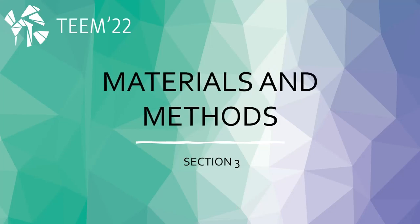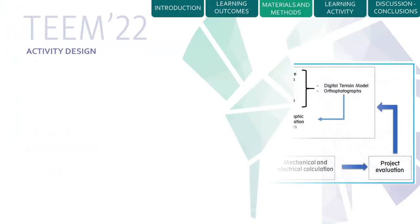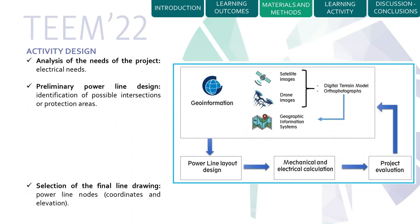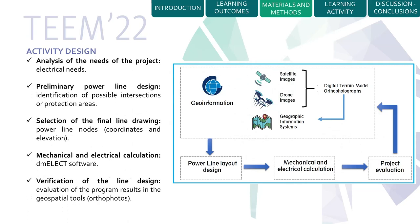In the materials and methods section, the activity design starts with the analysis of the needs of the project. The student must calculate the electrical needs and the preliminary power line design, using different tools explained by the professor, including geo-information, satellite images, drones, and geographical information systems.